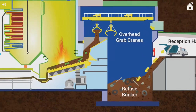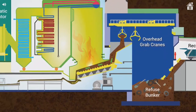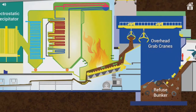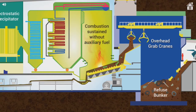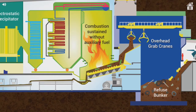Auxiliary oil burners are used only to start up the combustion. Once the refuse is fired and the furnace temperature maintained, the combustion of the refuse is sustained without the need for auxiliary fuel.